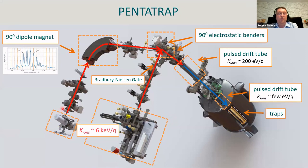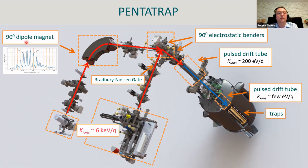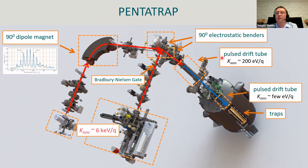Ions leave both EBITs with a kinetic energy of about 6 keV per charge state. Ions from the Dresden EBIT pass through a 90-degree dipole magnet for M/Q separation. The KEEP EBIT beam line is optimized for maximum ion transmission efficiency and uses a Bradbury-Nielsen gate instead of a dipole magnet. Both beam lines meet two 90-degree electrostatic cylindrical benders, which guide the ions down toward the Penning trap mass spectrometer. Prior to capturing ions in the Penning traps, they are slowed to an energy of a few eV using two potential tubes.